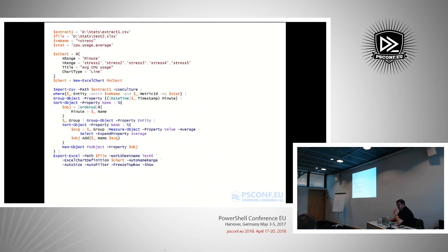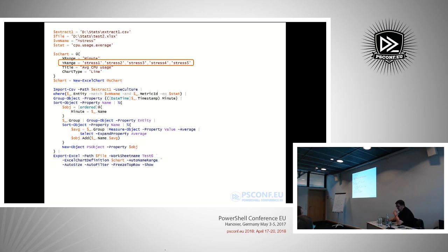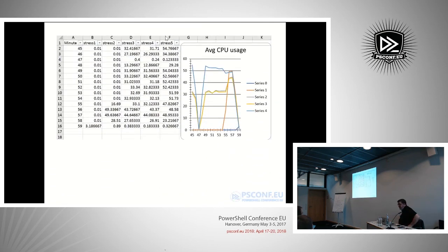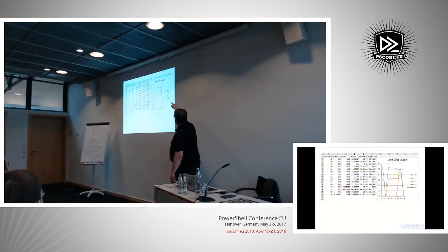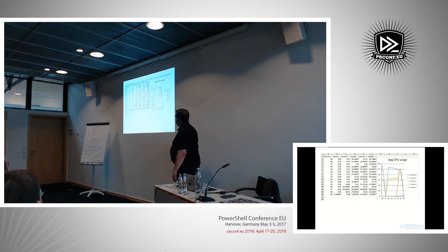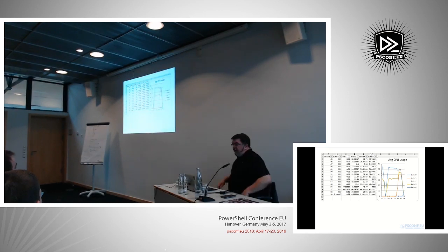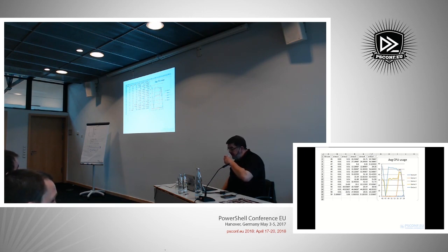Instead of having one line for one VM, you can display multiple VMs in the same graph. Just change the chart definition using splatting to specify all five VMs and look at their values. The result automatically includes color coding with five graphs. You can make these chart definitions very complex with New-ExcelChart. This is currently my favorite way of producing pretty-looking graphs — quite straightforward to produce useful visuals of your performance data.